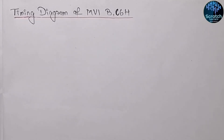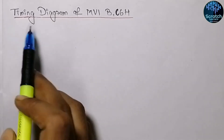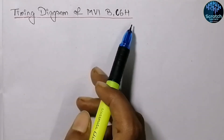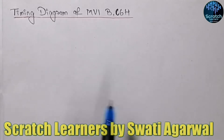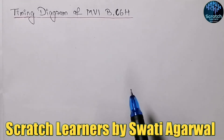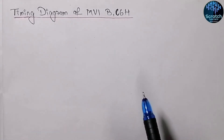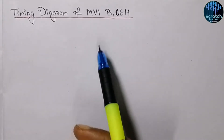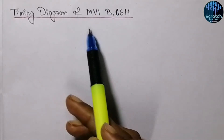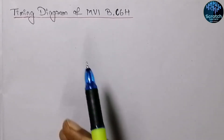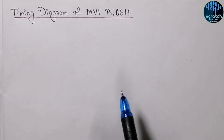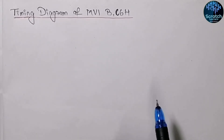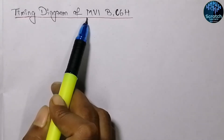Hello guys and welcome to our YouTube channel Scratch Learners. Today we will see the timing diagram of the MVI instruction. We have already discussed the timing diagram of the opcode fetch cycle, memory read, and I/O read and write machine cycles. Now we will be understanding the timing diagram of the instructions, as all these instructions use combinations of opcode fetch cycle, memory read and write cycle, and I/O read and write cycle.